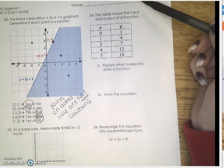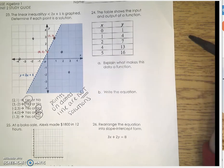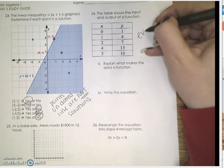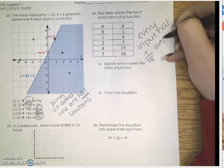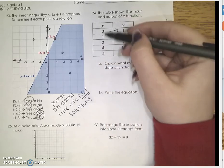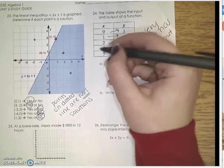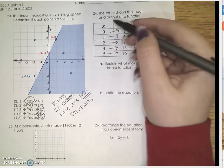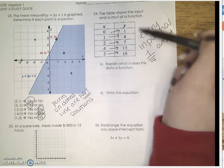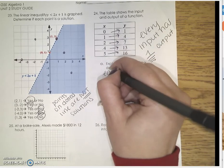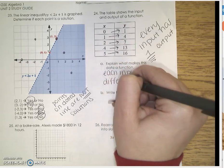Number 24 says that the table shows the input and output of a function. Explain what makes this data a function. So to determine if this table is a function, every input has one output. So only one. So 0 goes to 1, there's no more 0's. 1 goes to 4, no more 1's. 2 goes to 7, no more 1's. 4 goes to 13, no more 4's. 5 goes to 16, no more 5's. So since there's 5 different outputs with 5 different inputs, all with a different output, that makes it a function. So each input has a different output.